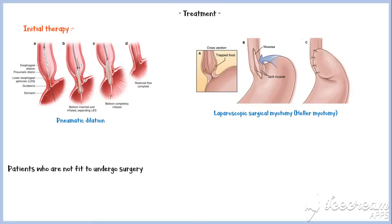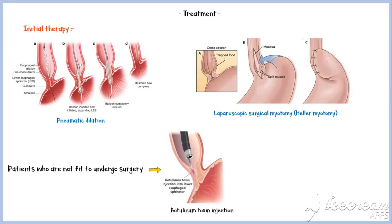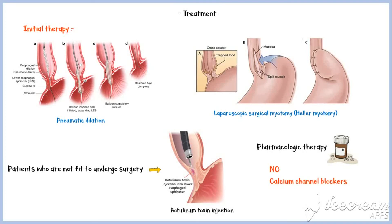Patients who are not fit to undergo surgery are treated with botulinum toxin injection. Botulinum toxin is a muscle relaxant which is commonly used in cosmetic procedures. Pharmacologic therapy can be used for patients who are not undergoing pneumatic dilation or surgery and who have failed to respond to botulinum toxin therapy. Nitric oxide and calcium channel blockers are the commonly used drugs in these patients.